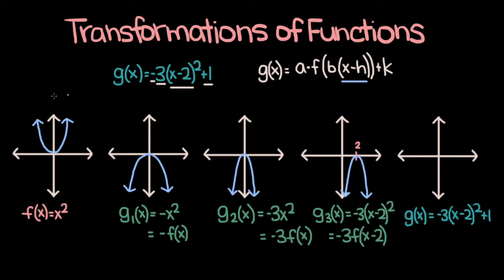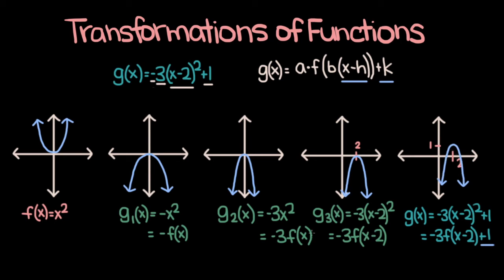Now the last thing we need to account for is this plus 1, and then we'll have g of x. If you want to write g of x in terms of f of x, it's negative 3 times f of x minus 2, plus 1. We've accounted for the negative 3 and the x minus 2 already, so now let's focus on the plus 1. Adding a constant to a function causes a vertical shift. In this case we're adding 1, so g of x is going to be shifted one unit up. So if this is 2 and this is 1, then g of x looks something like that, where its vertex is at the point (2, 1).